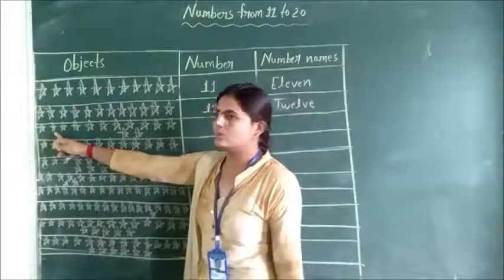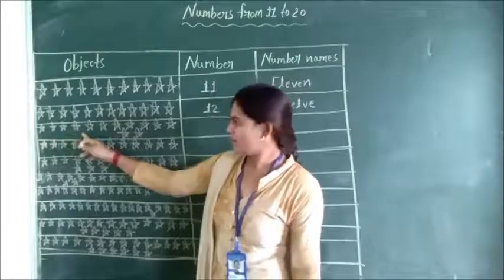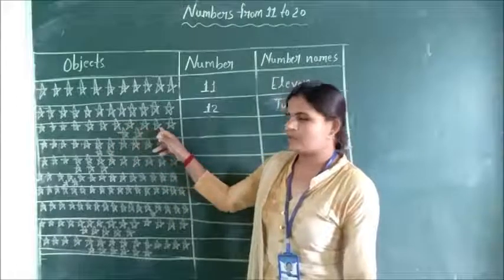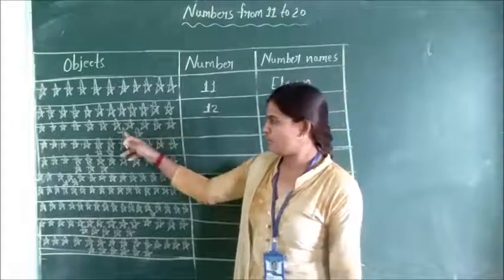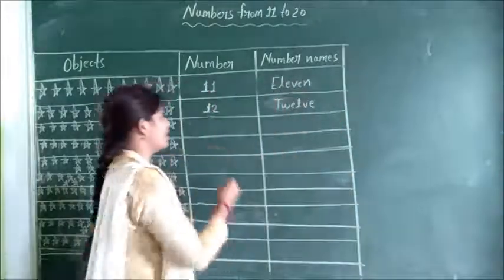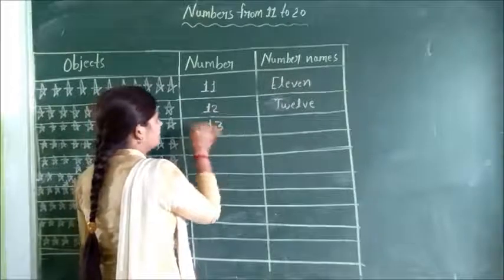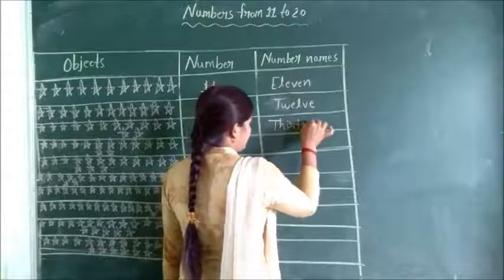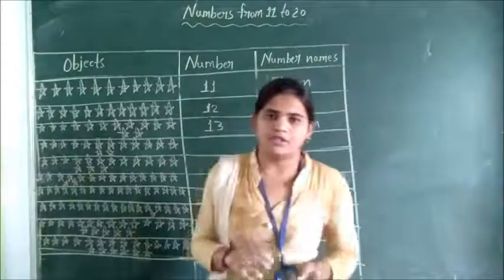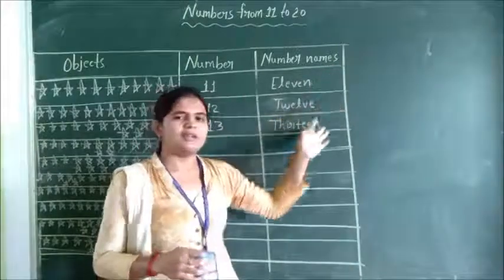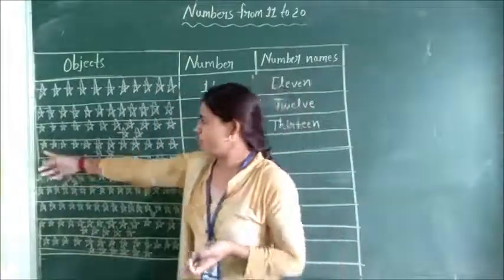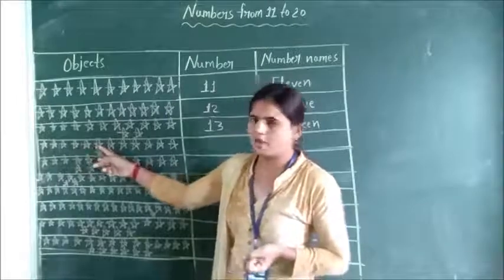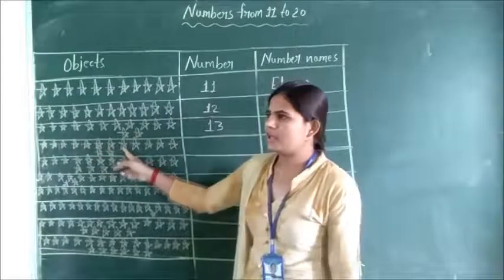Count: 1, 2, 3, 4, 5, 6, 7, 8, 9, 10, 11, 12, 13. Again: 1, 2, 3, 4, 5, 6, 7, 8, 9, 10, 11, 12, 13. Thirteen.